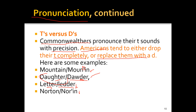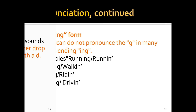I was from New Jersey and even I was saying 'ledder' — I used American English. Then for 'Norton,' Britishers use the T but Americans just drop it — 'Nordn,' no T. This T's versus D's topic is very important and we must know it. I'll review it again in the next class, but let's move on to the next one.